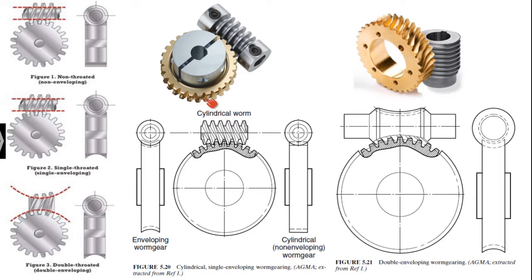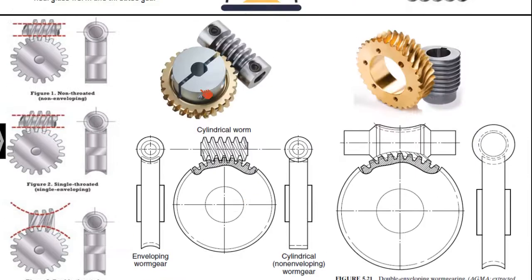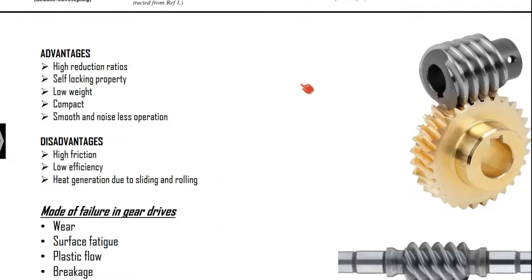Such advantages exist for single-enveloping and double-enveloping types. However, your design will be purely based upon the non-enveloping type of worm and worm wheel. Coming to the advantages: it has very high reduction ratios, a self-locking property — which is one of the highlighting properties — and because of the compactness of the system, the weight is low and the operation is smooth and relatively noiseless.